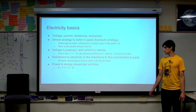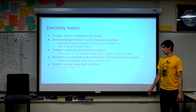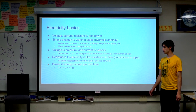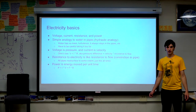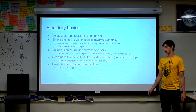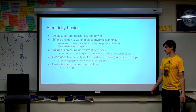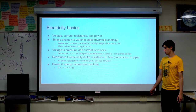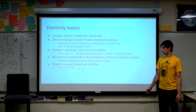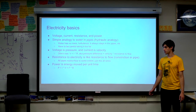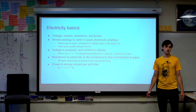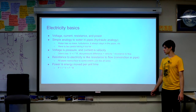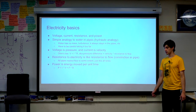Power is energy moved per time. In the water analogy, energy is like having a bunch of water up high with potential energy — power is how much of that you move how quickly. For electricity you can calculate power as either current times voltage, or current squared times resistance. If you look at Ohm's law, those are basically saying the same thing.